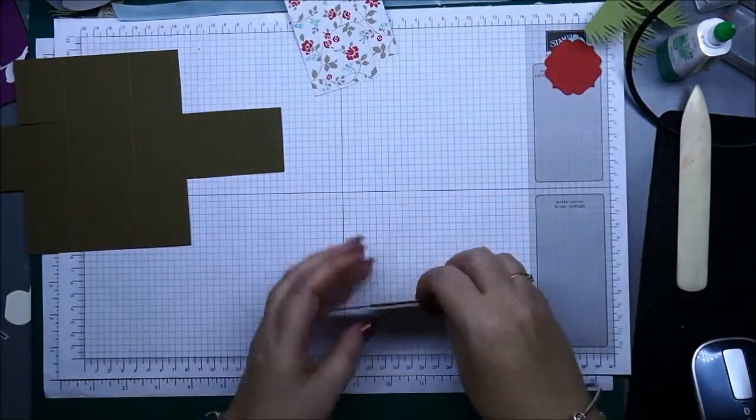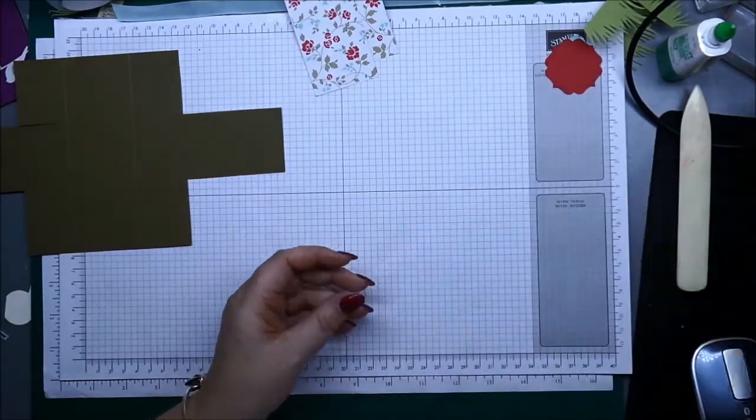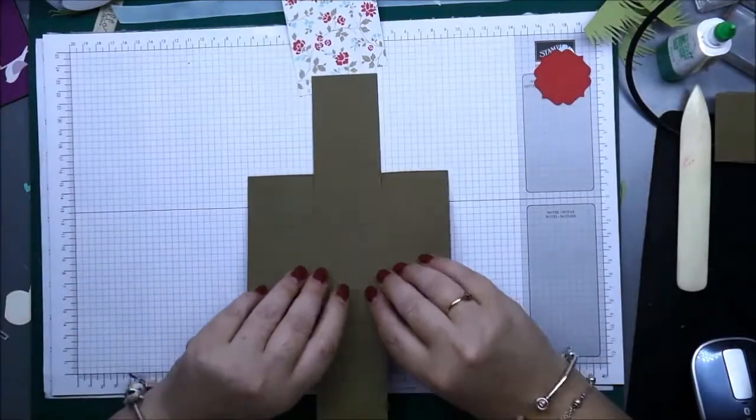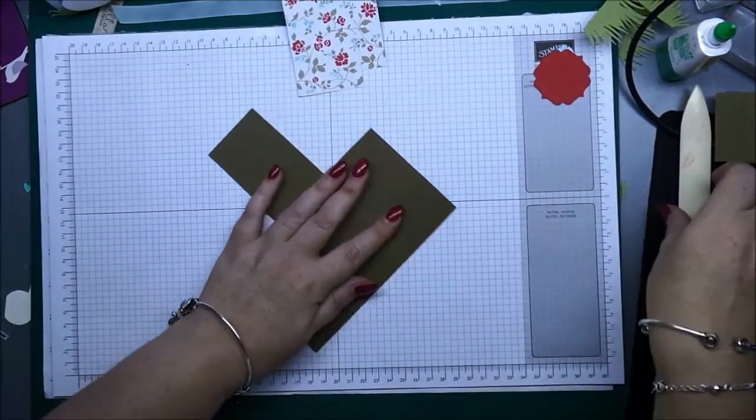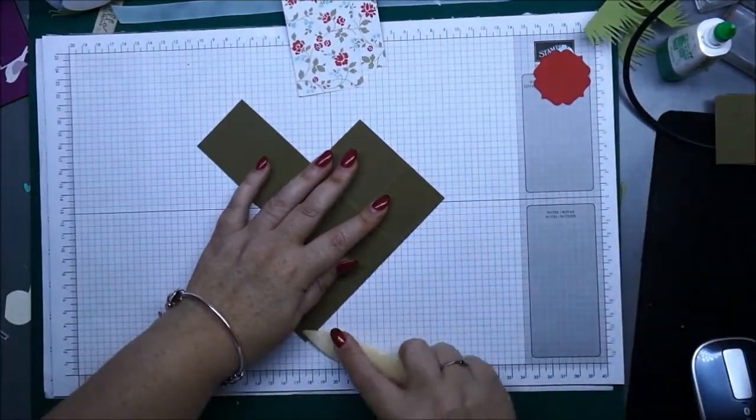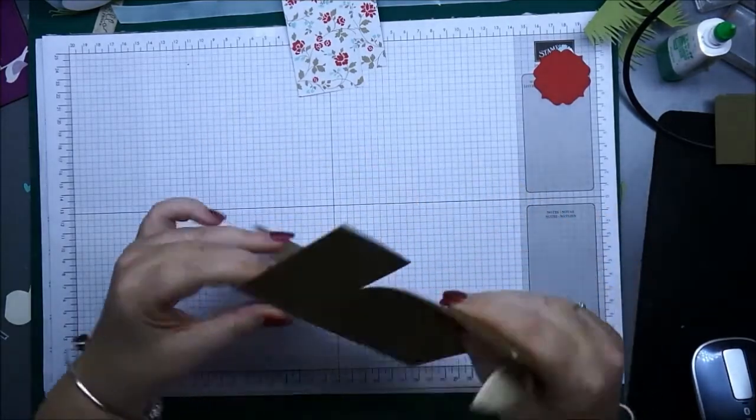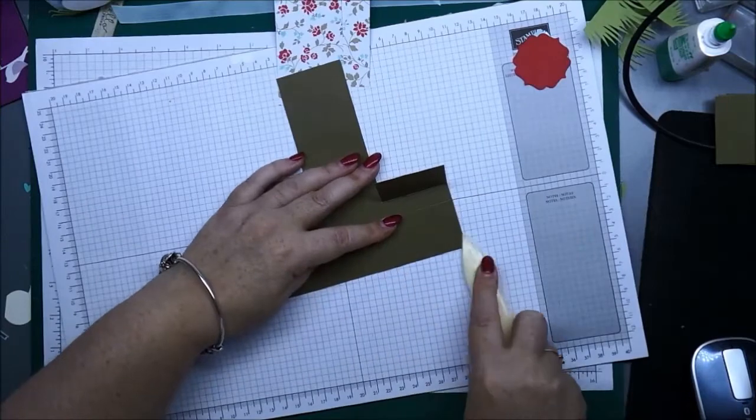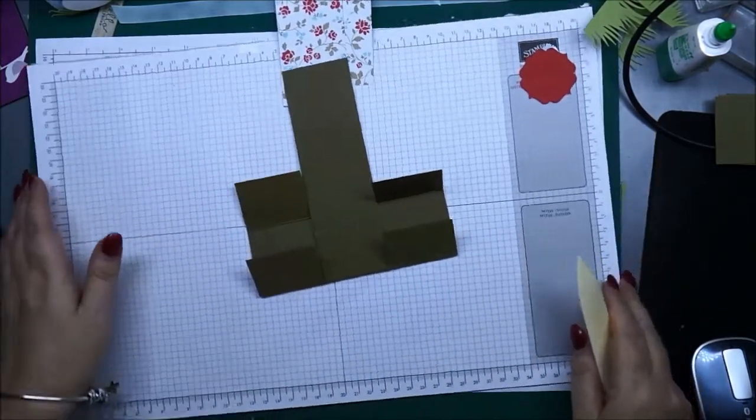So just pop them to the side, don't throw them out because they'll make good little mats for sentiments or images, or you can use them to punch things out too. So we're just going to burnish with the bone folder all our score lines.